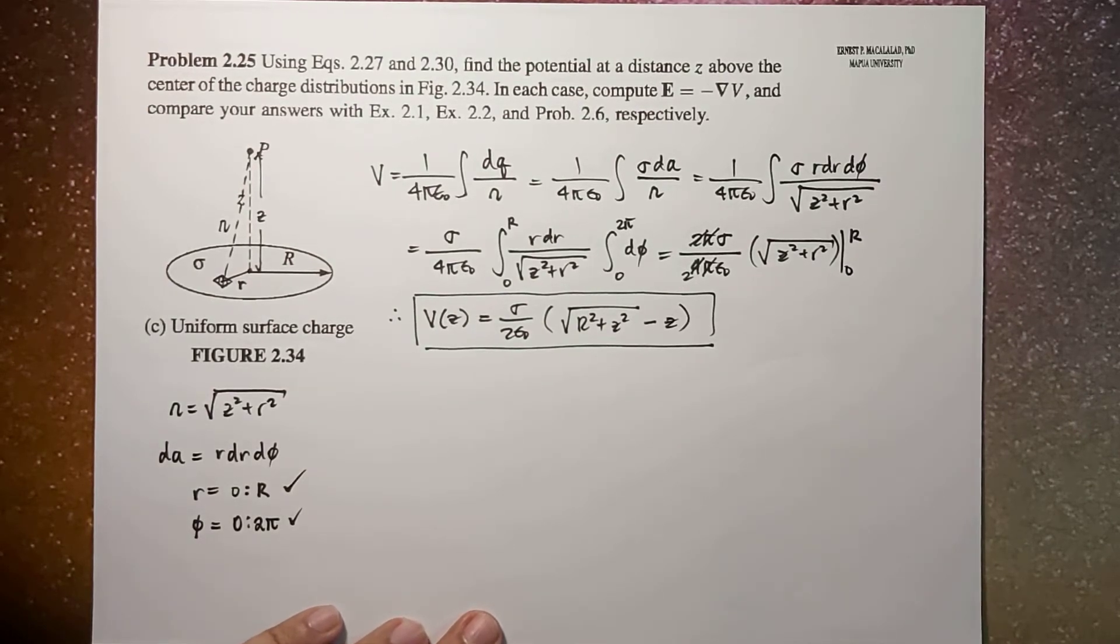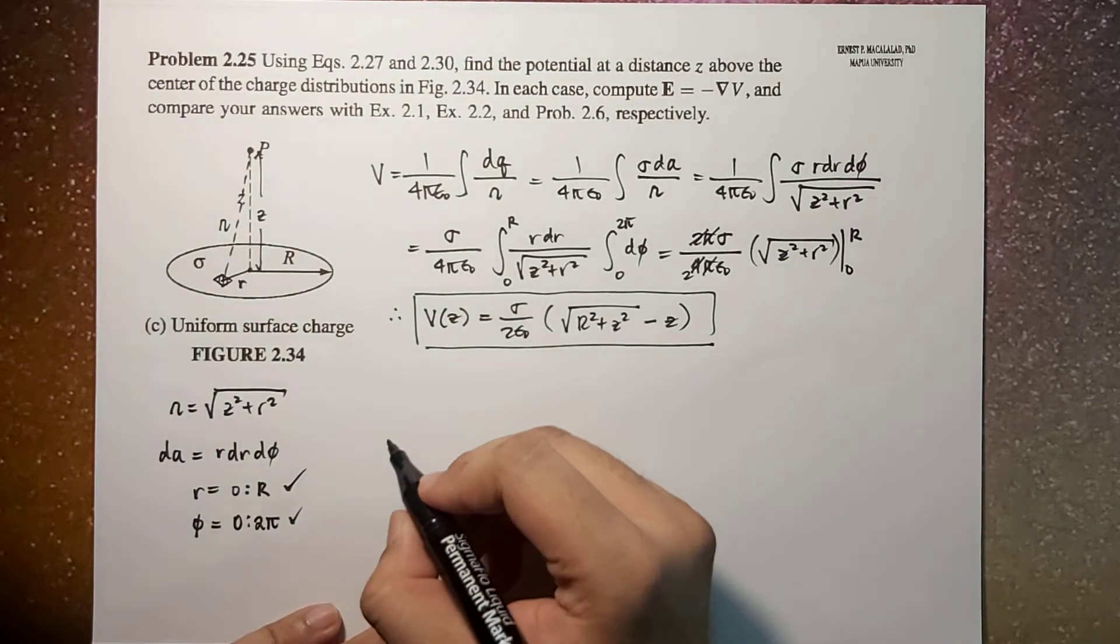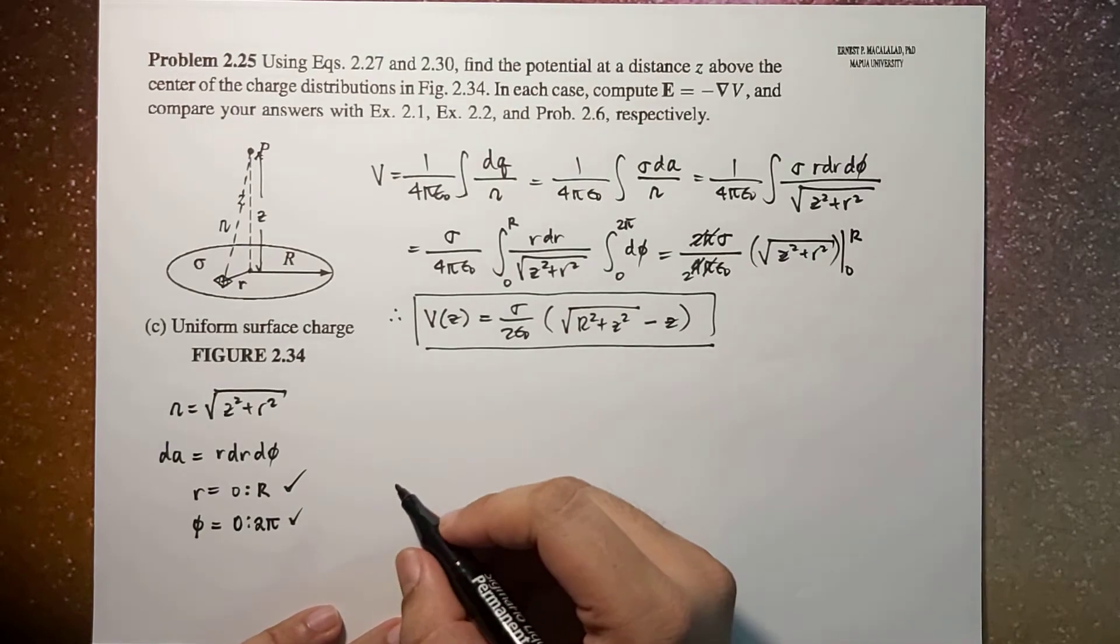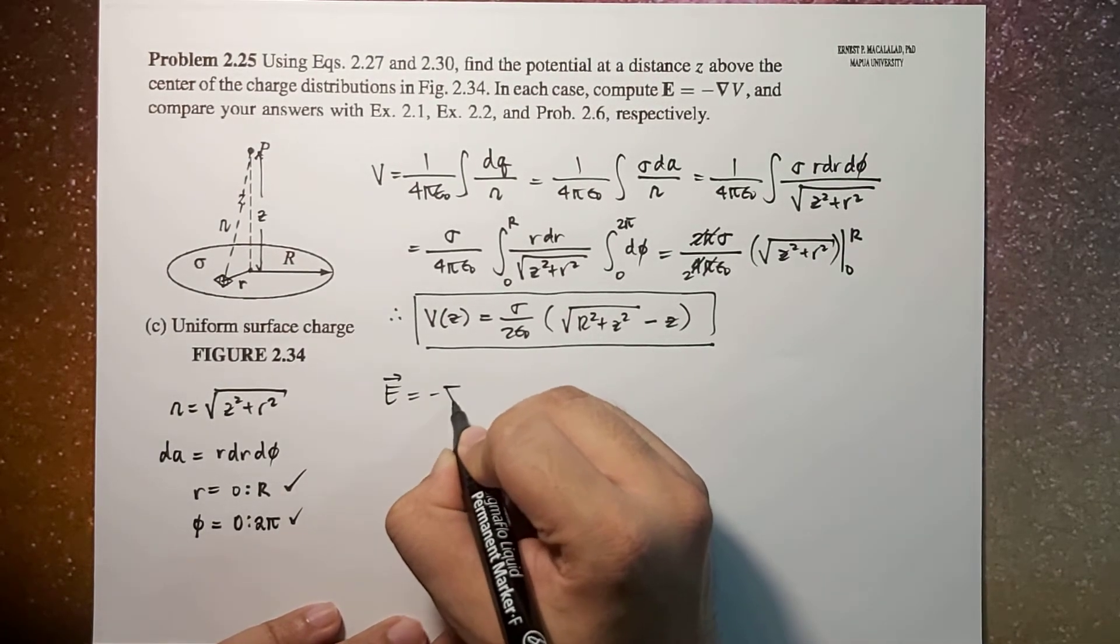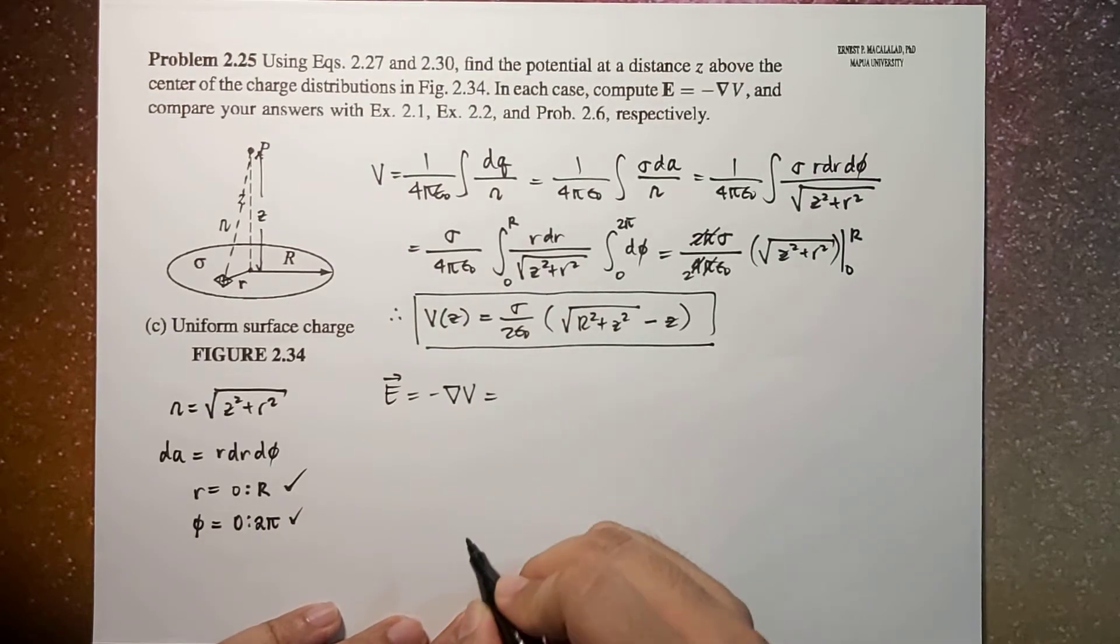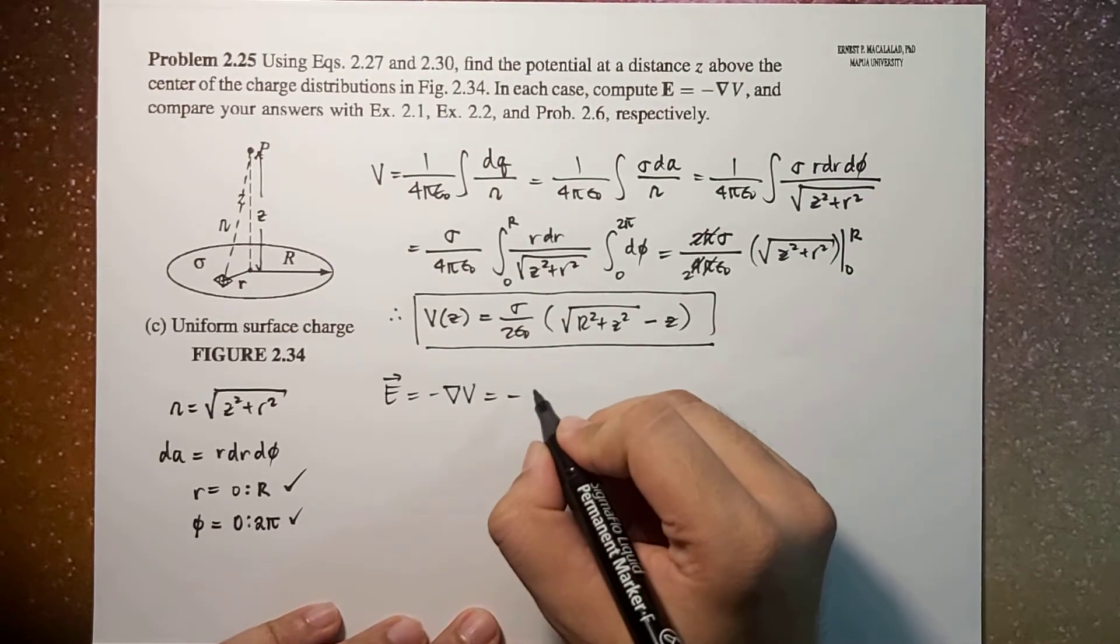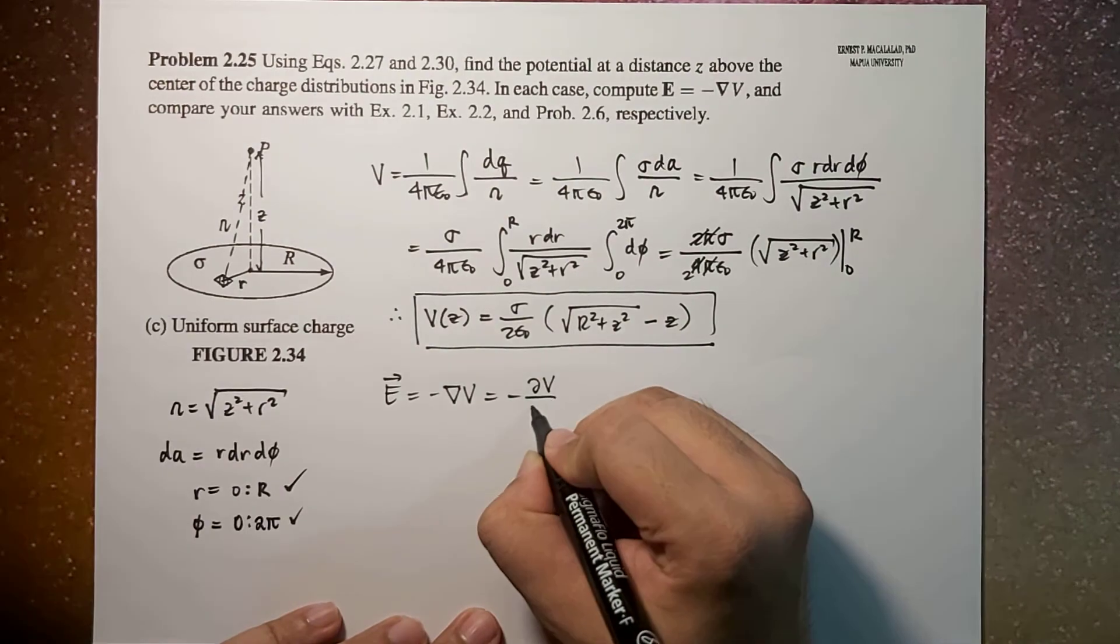Very easy, right? Now because the potential is a function of z, just like the previous two configurations, the electric field which is defined as negative gradient of V can be simplified as negative derivative of V with respect to z.